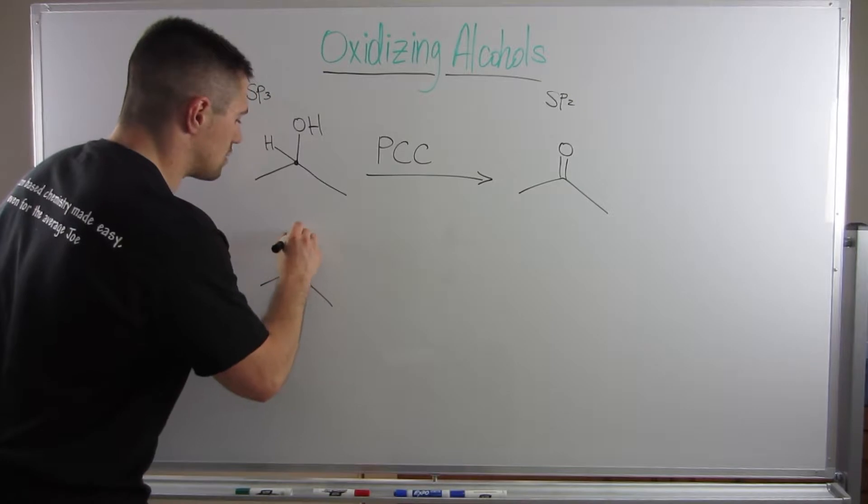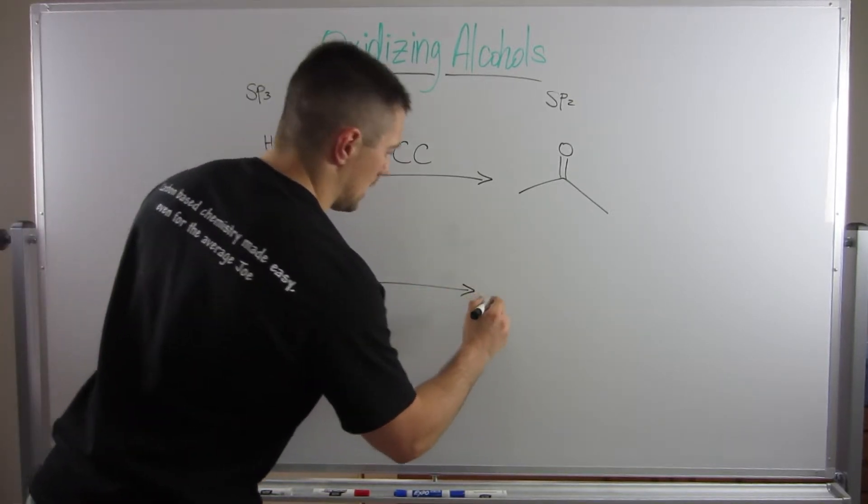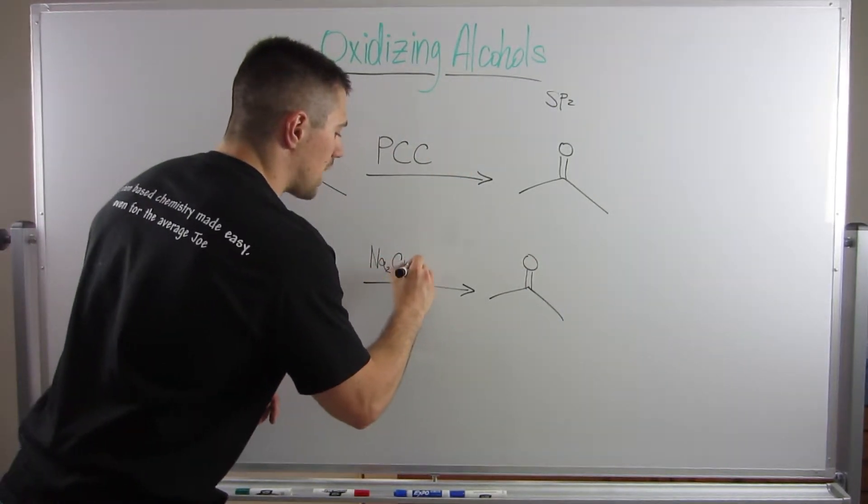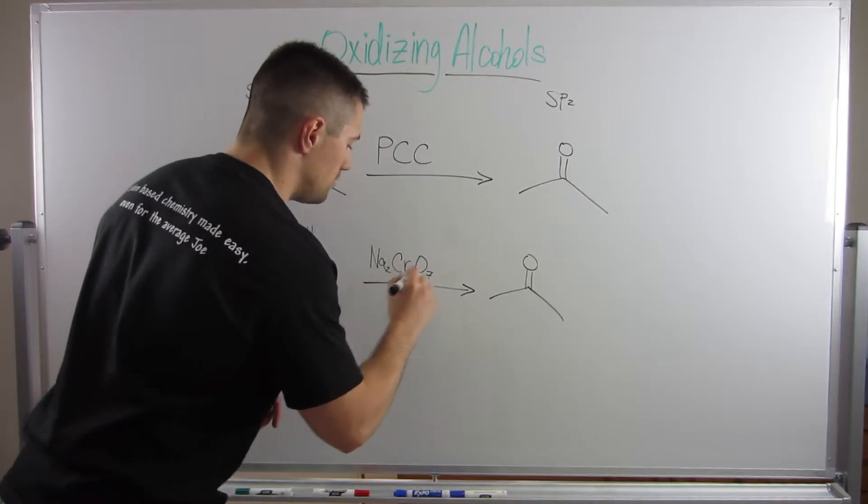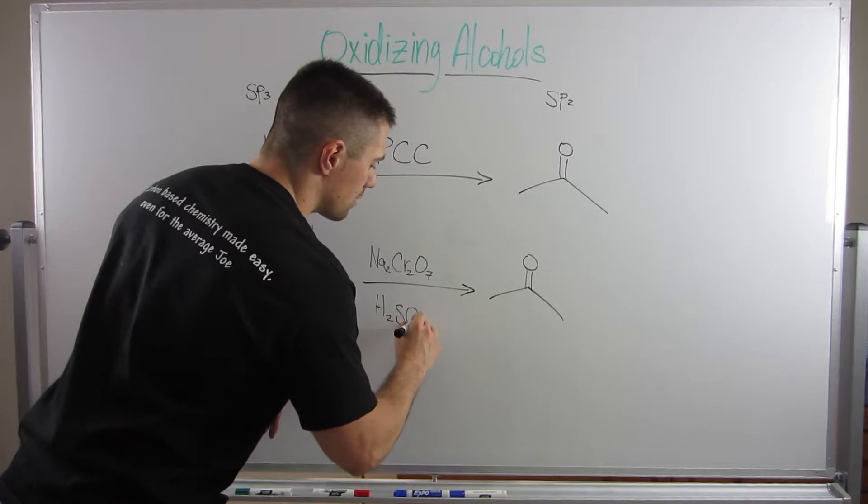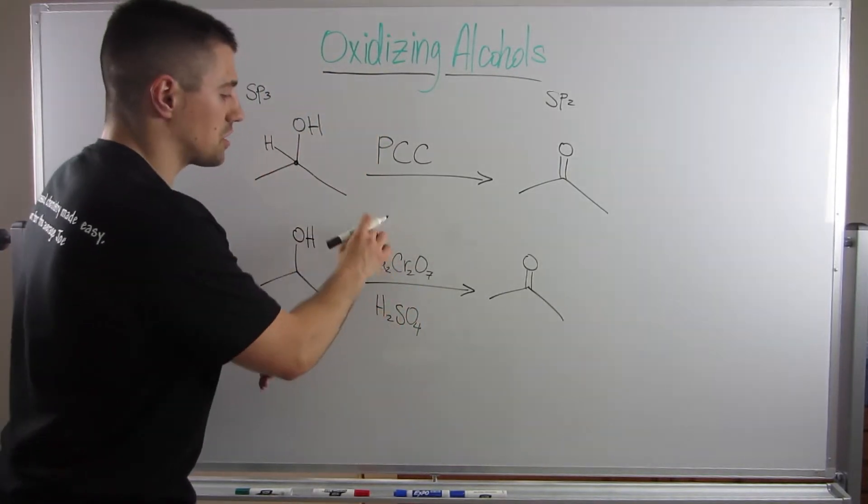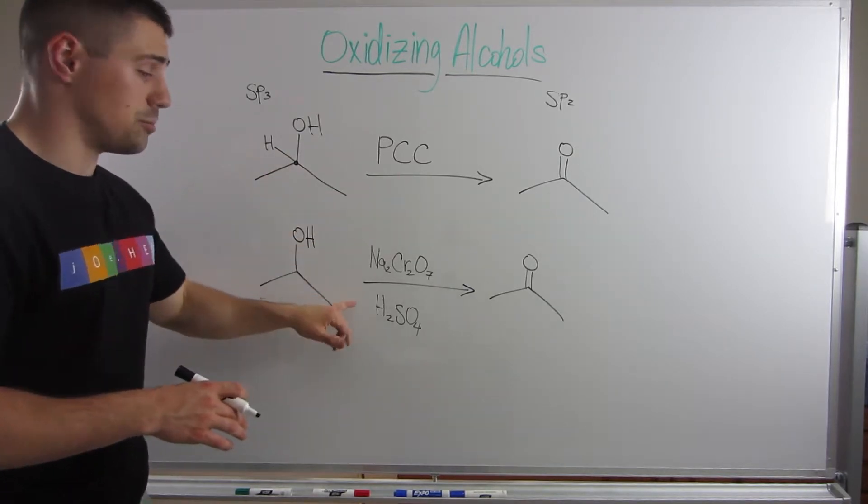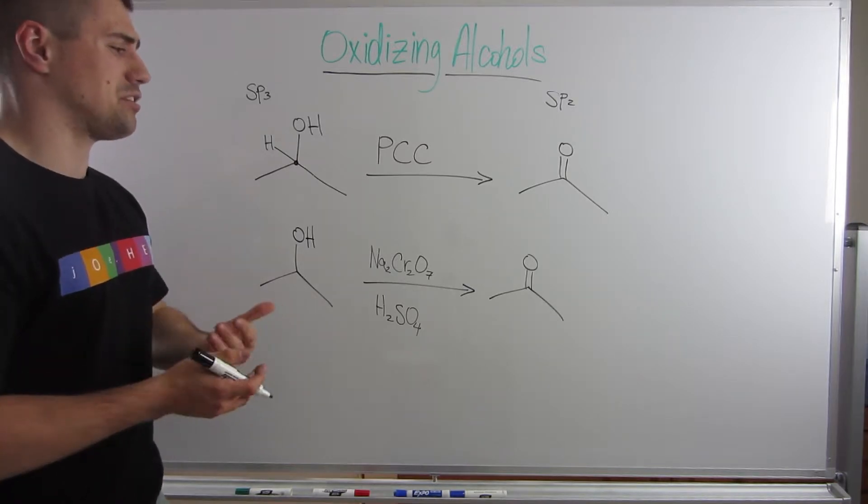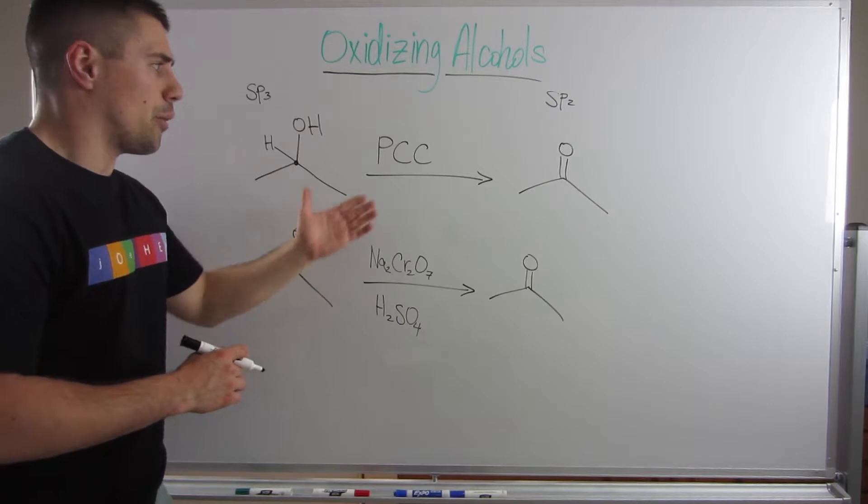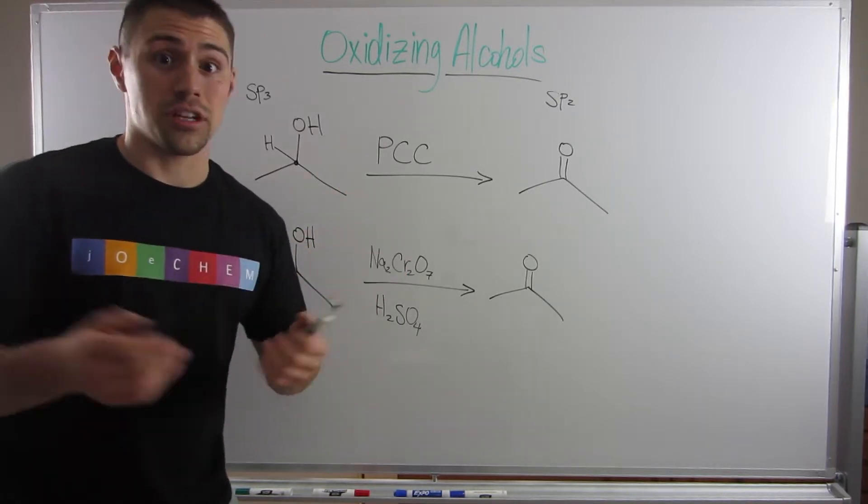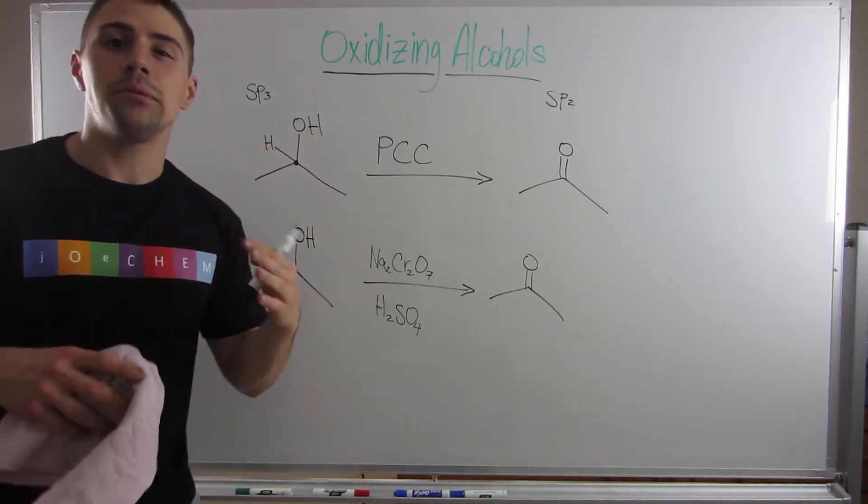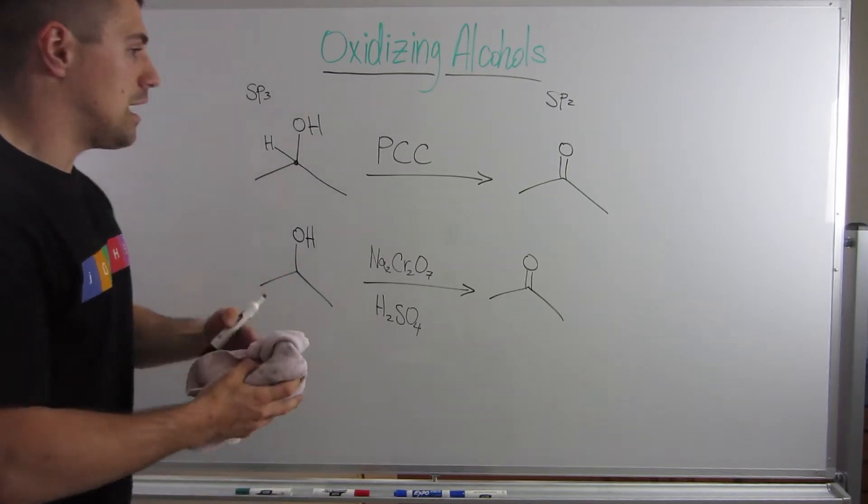Now, the other set of reagents that can accomplish this, and you'll probably see this and be like, whoa, Joe, what are you doing? You need both sodium dichromate, Na2Cr2O7, and H2SO4. It doesn't matter that I'm drawing them on both sides of the arrows. It could be up top, whatever. So one route is PCC. The other route is sodium dichromate and H2SO4. Now, you might be thinking to yourself, why the hell would I remember these reagents when I can just write PCC? That's a great question. I would agree with you.